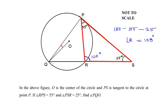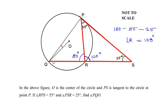Now angle QRP acts as an exterior angle to triangle PRS, and QRS acts as a straight line. So we can find this angle by subtracting 100 degrees from 180 degrees. 180 minus 100 gives us 80 degrees, so angle QRP is 80 degrees.